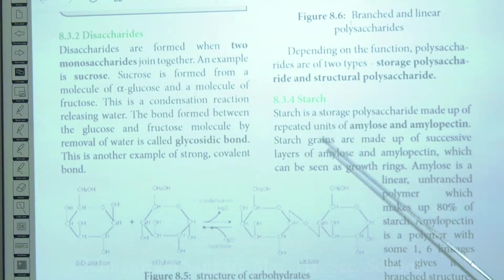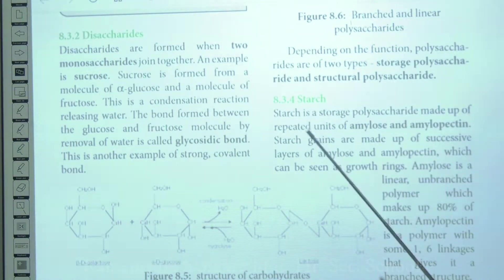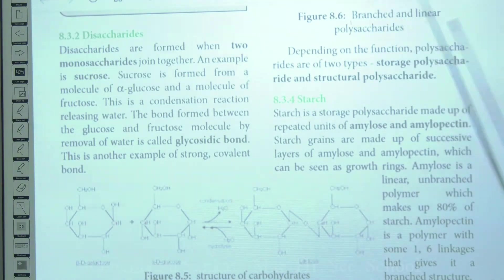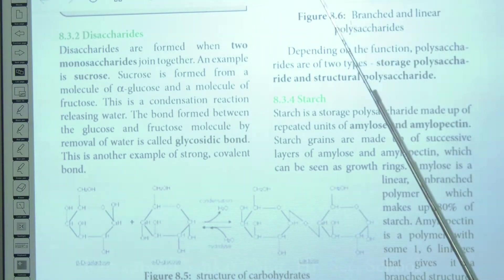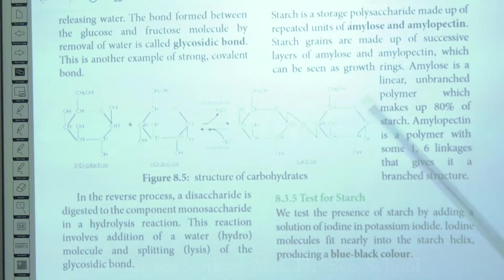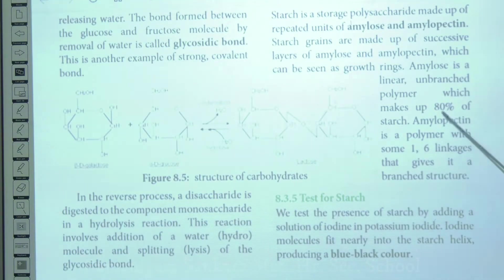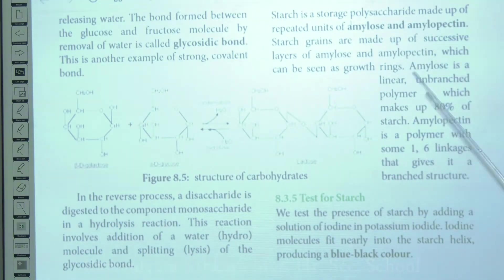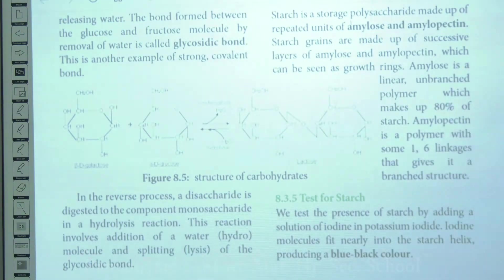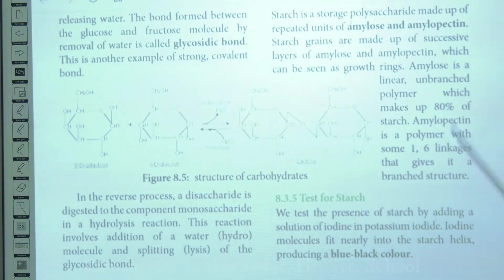Starch is mainly made up of two important molecules: amylose and amylopectin. Amylose is a linear, unbranched polymer making up about 80% of starch. Amylopectin is a branched polymer making up the remaining 20%. Amylose is formed by alpha-1,4 glycosidic linkages, whereas amylopectin has both alpha-1,4 and alpha-1,6 glycosidic linkages — the 1,6 linkage being responsible for its branching.